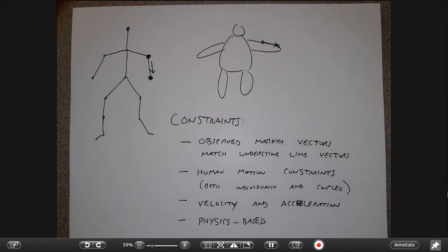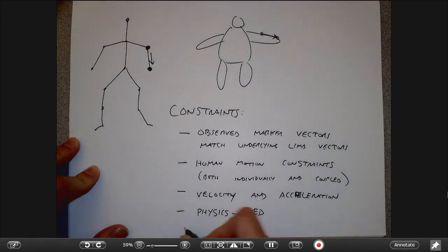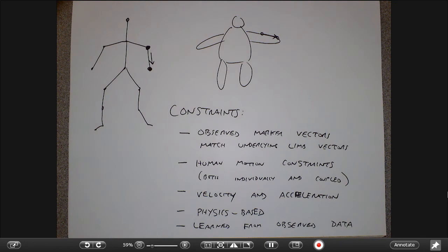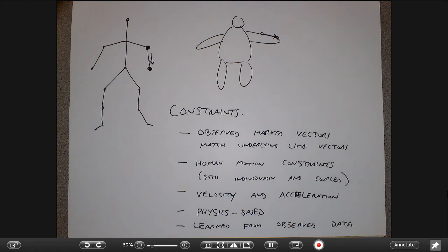Another approach is learning constraints from observed data. Instead of purely biomechanical constraints, you can observe lots of people in your mocap studio and figure out what natural types of motions humans do, then use that model to only generate poses matching what you've seen before.